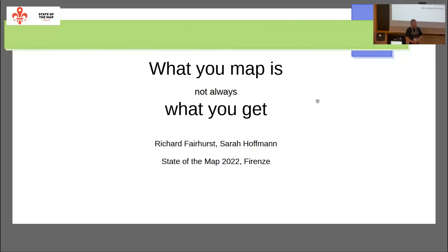Richard is working on cycle.travel, which is a platform that lets you plan proper cycle routes, and he's had lots of experience in how data needs to be interpreted. Sarah is maintaining the Nominatim geocoder that you all use when you type something in the search box in OpenStreetMap. She's the person who has to answer all those 'why is this address not found?' or 'why does this house show up as belonging to city A when it is part of city B?' questions — and then she either has to fix the tagging, fix her software, or tell the person to get lost.